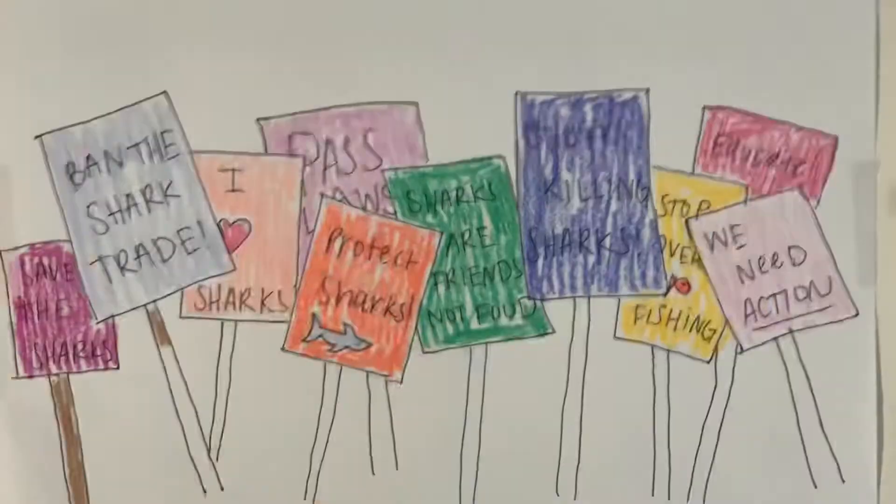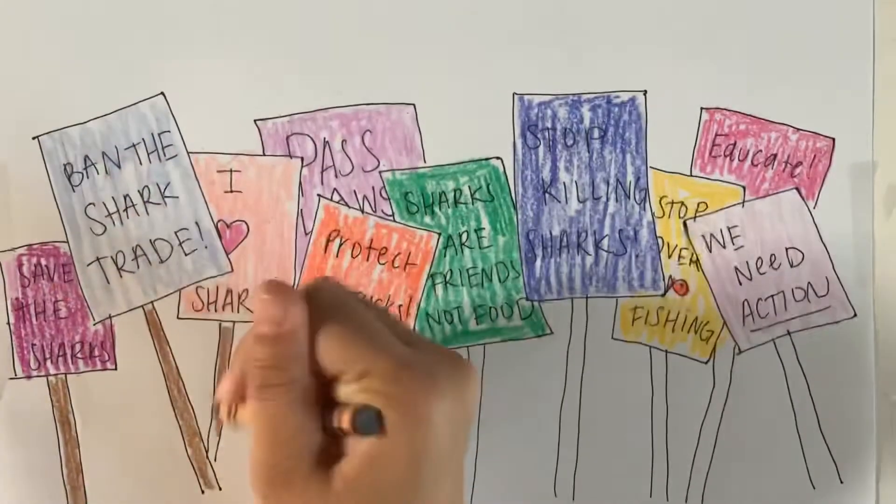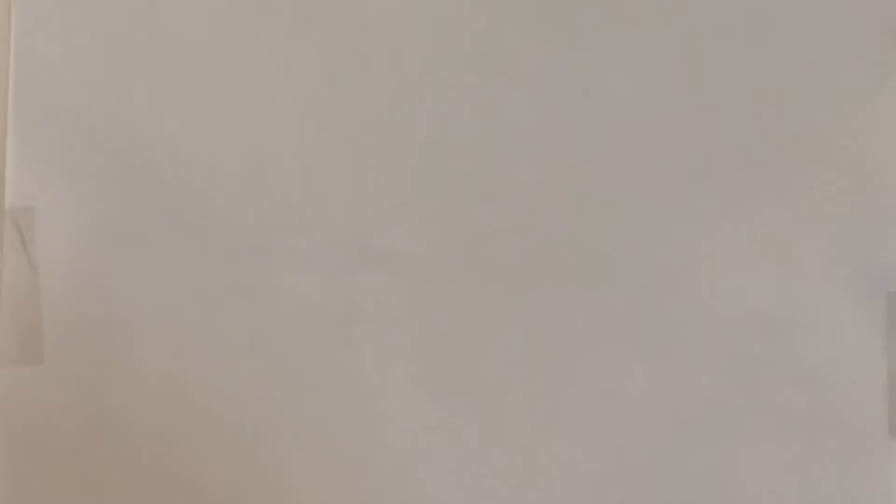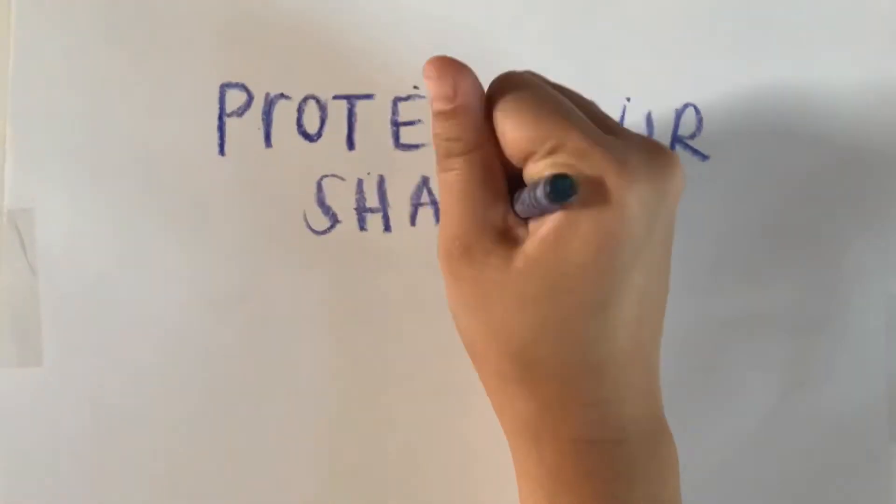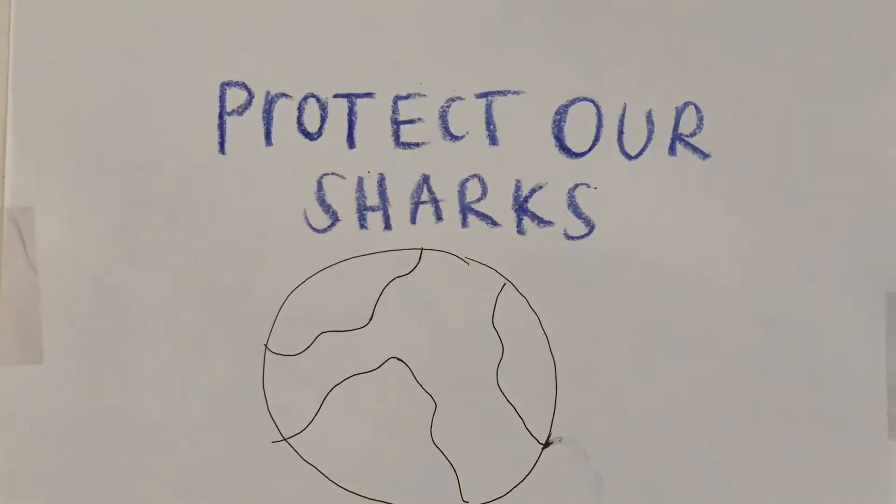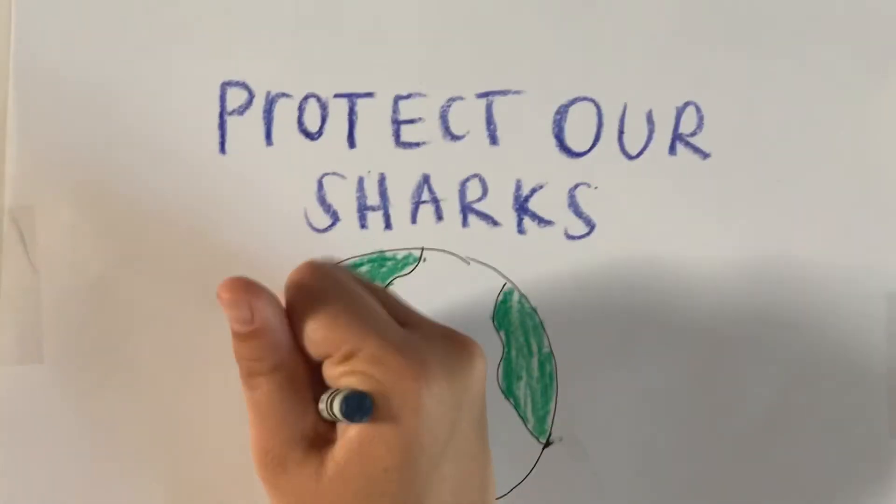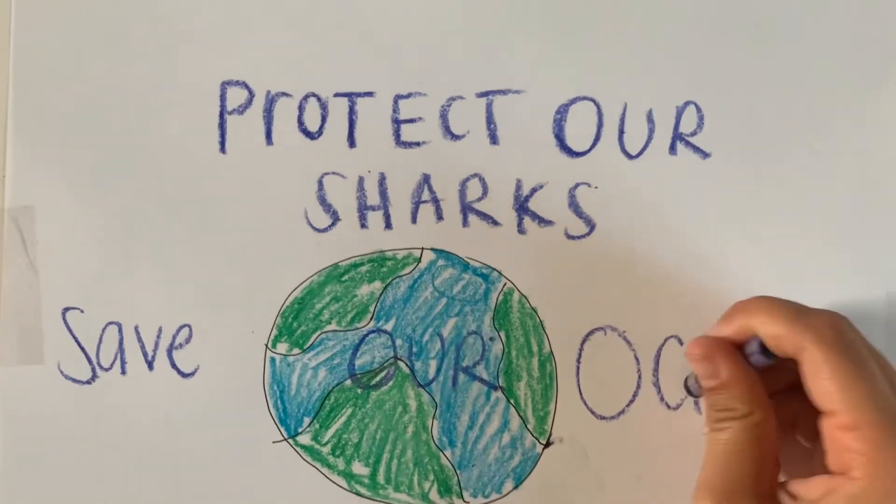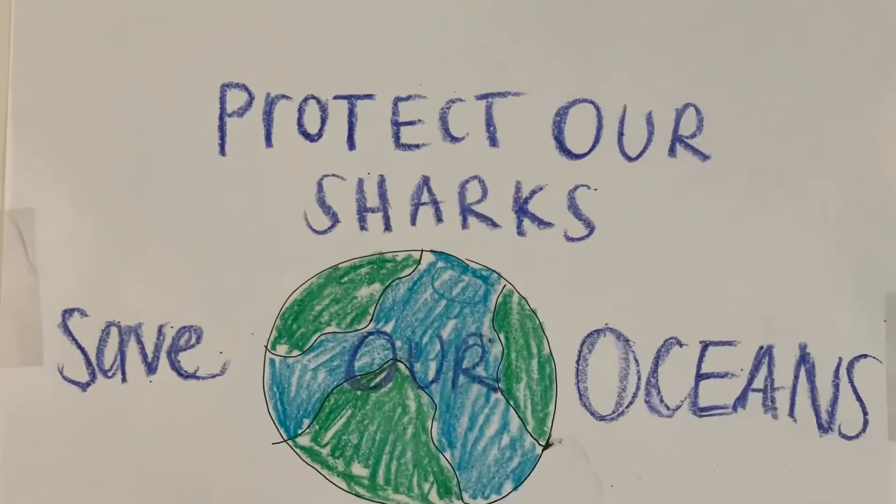While they may not be allowed to be caught by an Australian boat, they can still be picked up by a Japanese fishing boat in the same waters. Another way that individual countries can help is by banning the trading and selling of shark fins as well. Aside from just banning the catching of sharks, if they ban selling of these products, the catchers will have no market to sell their products to. As a result, less sharks will be killed.